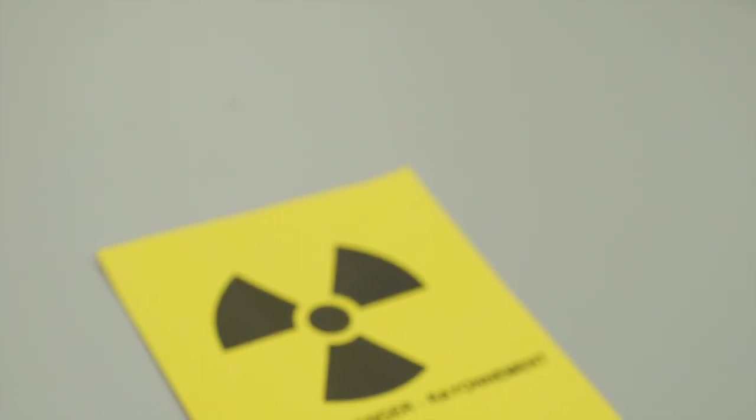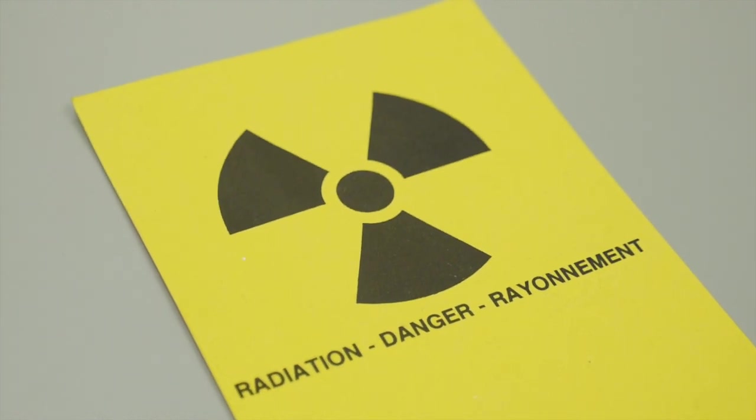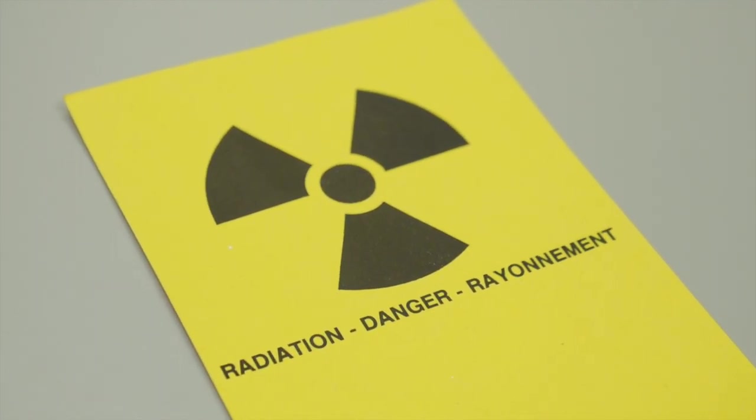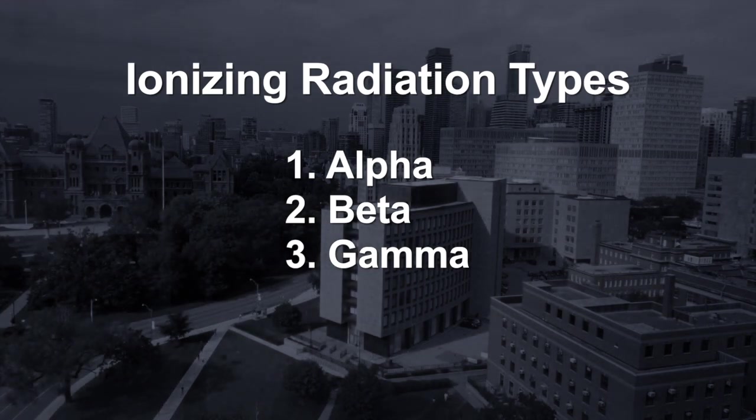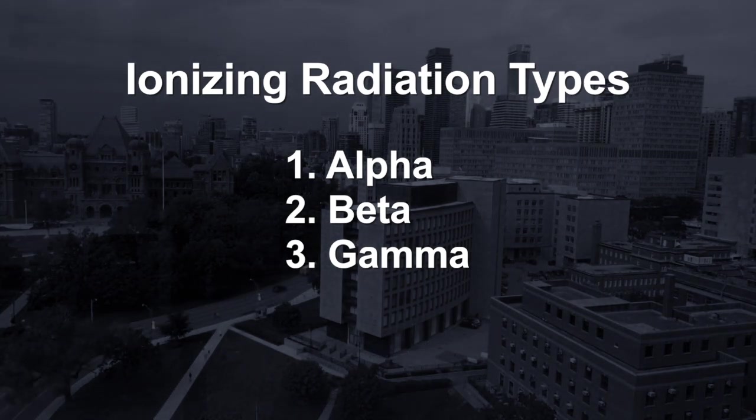Ionizing radiation carries enough energy to free electrons from atoms or molecules. Three common types you may come across in labs are alpha, beta, and gamma radiation.